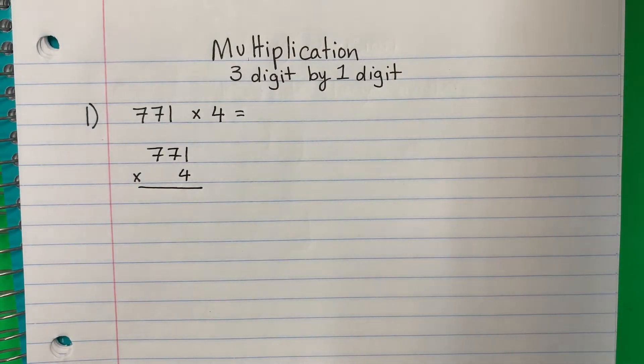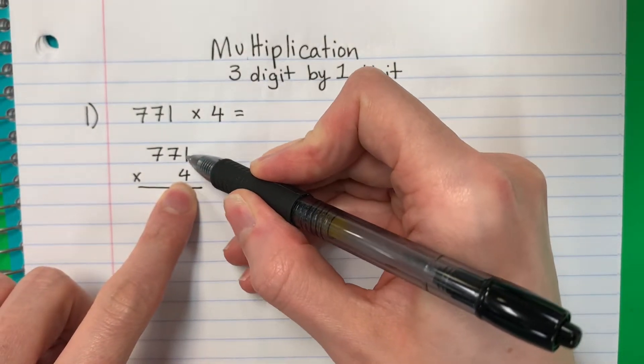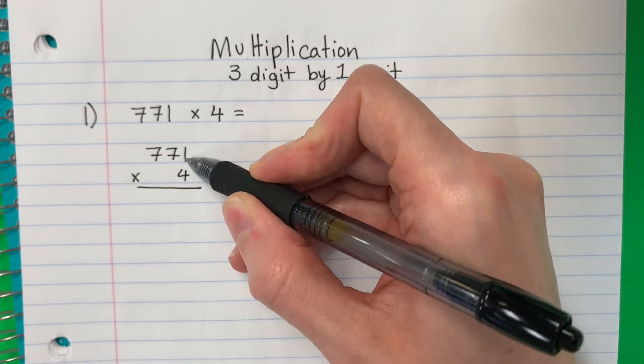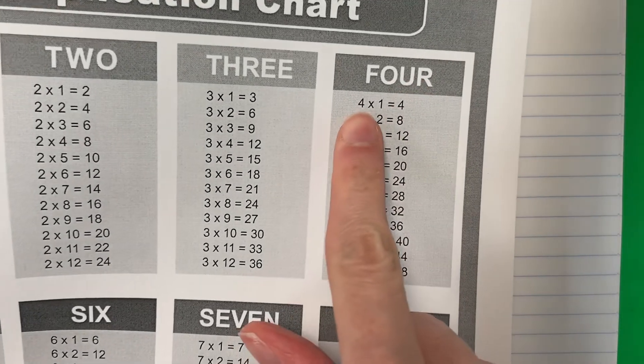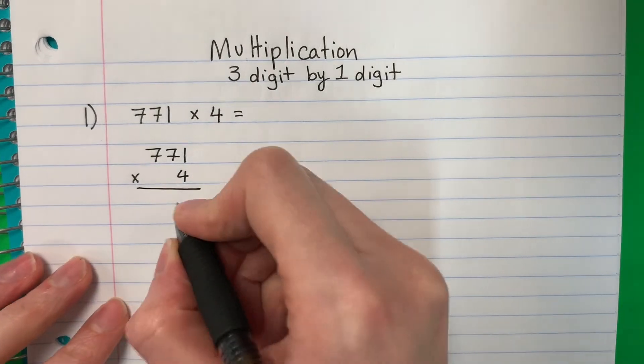Alright, so let's go. Vamos. Alright, so first, primero, you do four times one. Cuatro por uno. Four times one. What is four times one? So you could take a look here in the four. Four times one, cuatro por uno, four. Cuatro. So you're going to go ahead and write four.